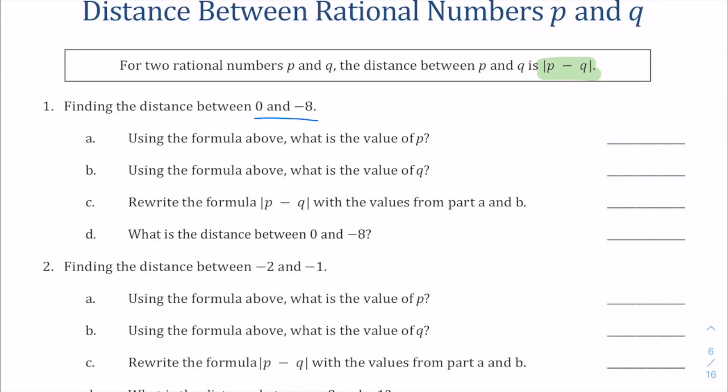So what would be the value of p here? That would be zero. What would be the value of q? That would be our negative eight. Those are our two numbers we're trying to find the distance between.